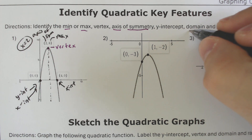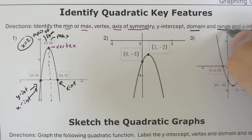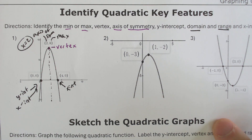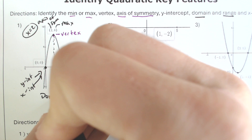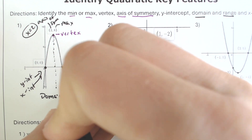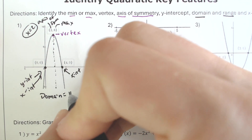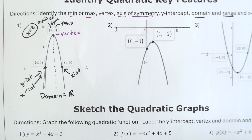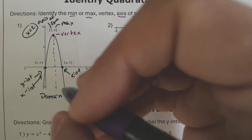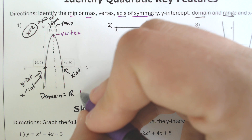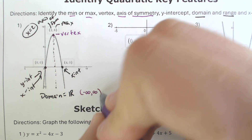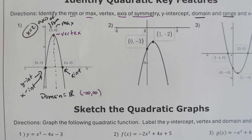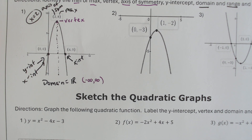The last thing we need to deal with is the domain and the range. The domain is going to be pretty easy. The domain for each and every one of these is going to be all real numbers. You could say that fancy-looking R, or you could do negative infinity to positive infinity. You could do all real numbers — you could list it out as well.